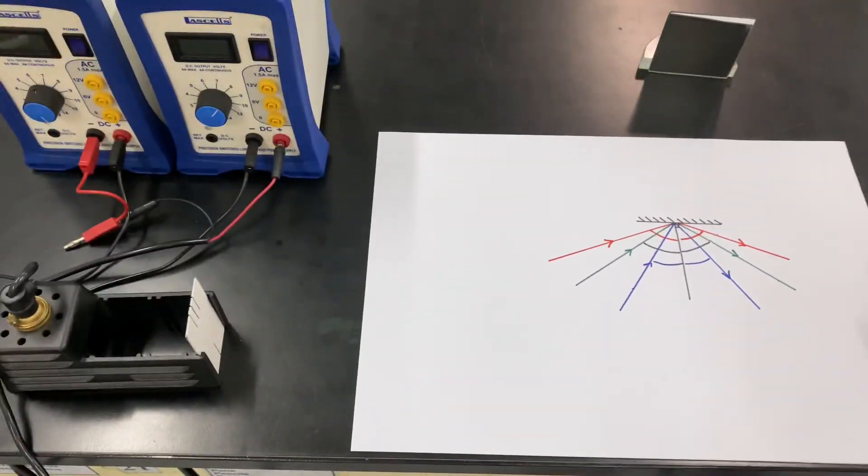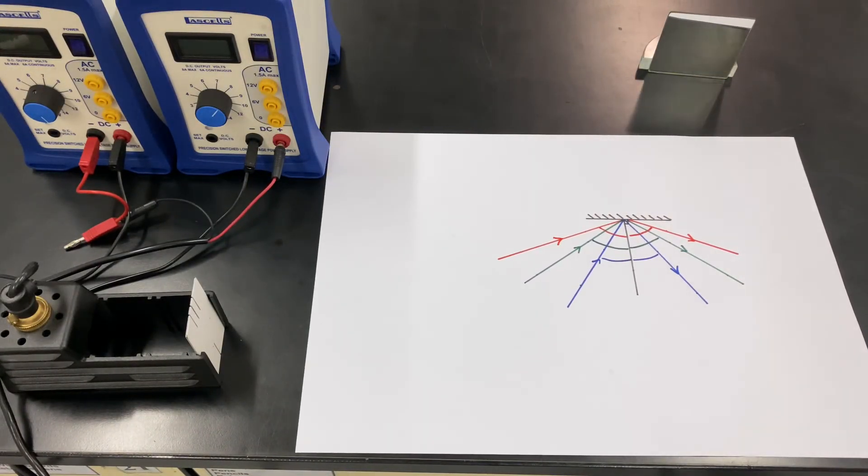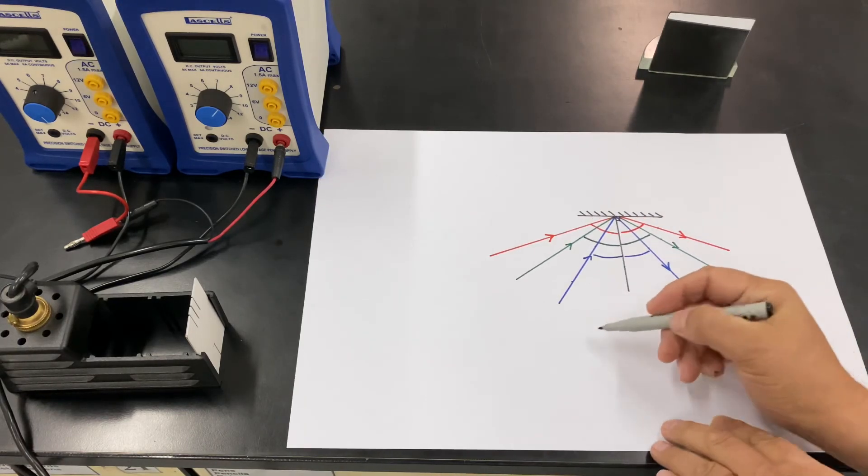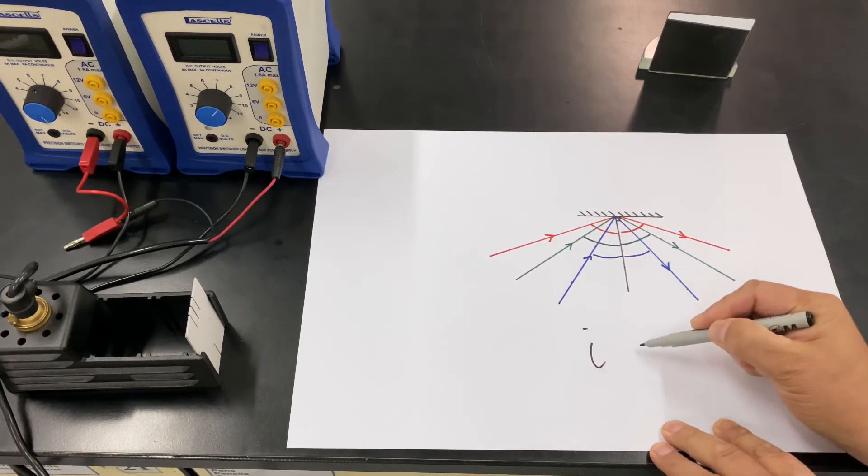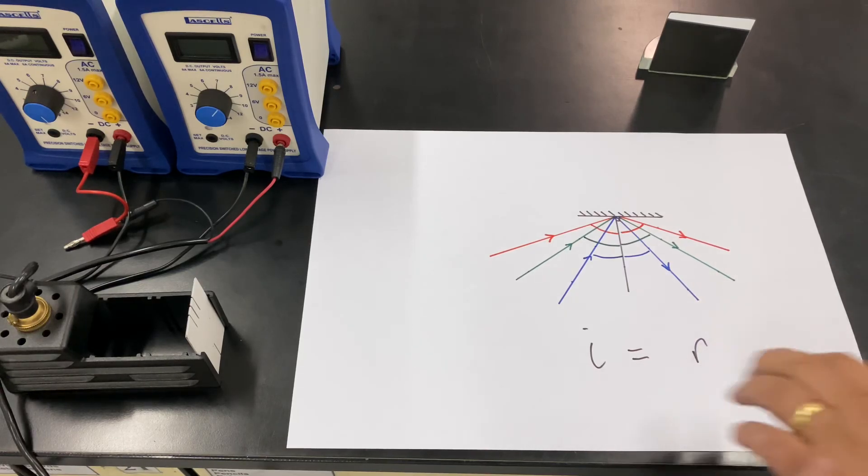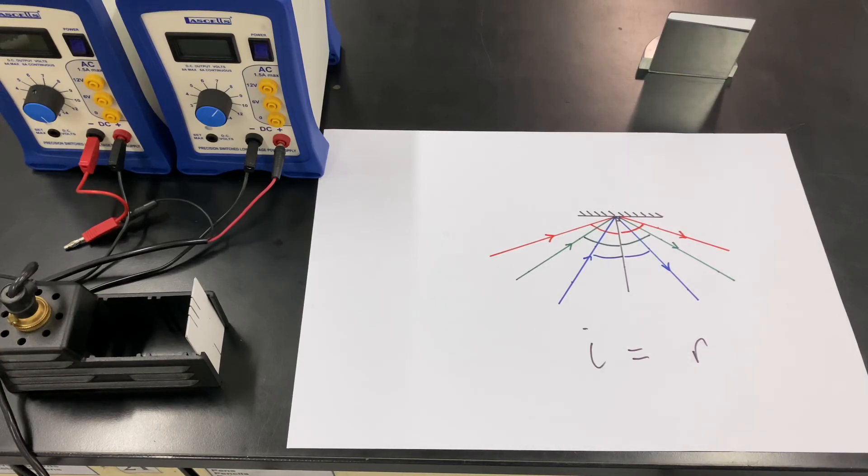Okay, so there you have it, the law of reflection, which is angle of incidence is always equal to the angle of reflection at a plane mirror.